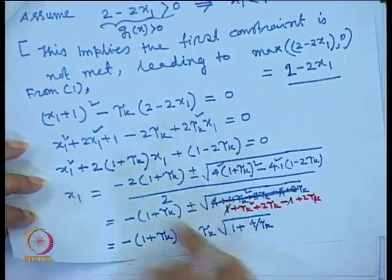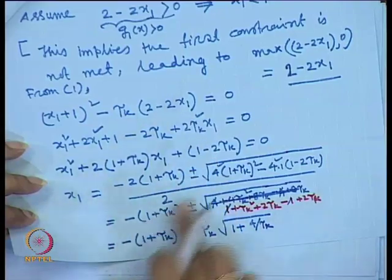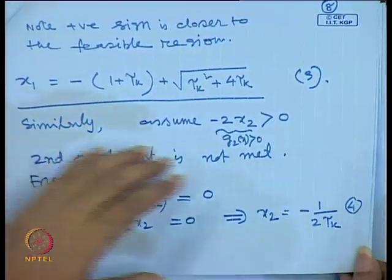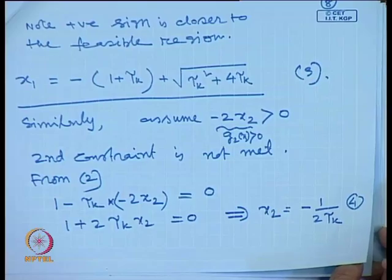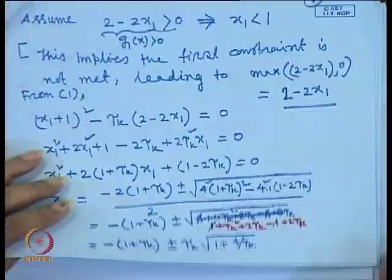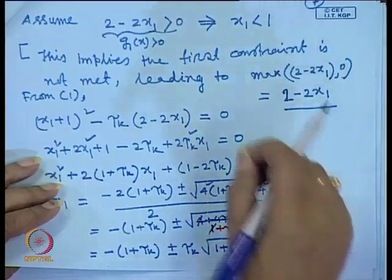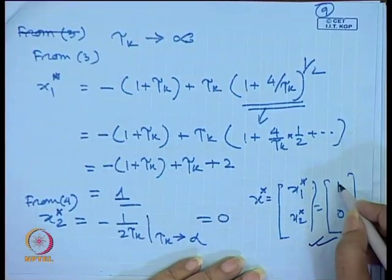Similarly, for x₂ we must take the proper sign. Note that x₁ and x₂ correspond to infeasible solutions — exterior point means infeasible solution. We find function values that decrease with each iteration, ultimately converging to an optimum feasible value. We got x₁ = 1, x₂ = 0 as the optimum when penalty coefficient tau_k tends to infinity.